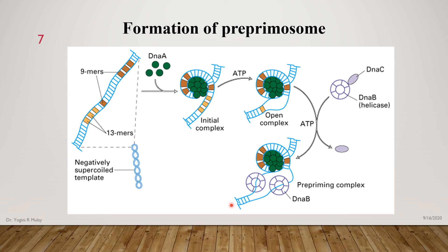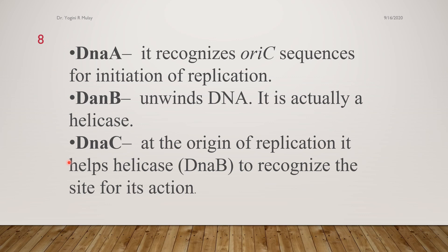Two different proteins are present in the pre-priming complex: the DNA C protein and DNA B protein. To summarize which proteins are involved in the formation of the pre-priming complex: number one is DNA A protein, which can recognize the 9 base pair sequence and unwind the DNA at the 13 base pair sequence.